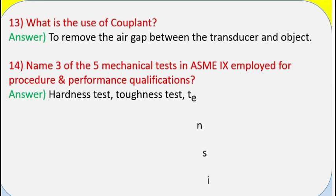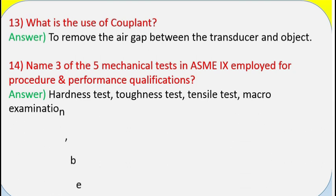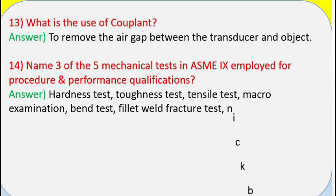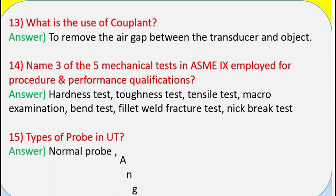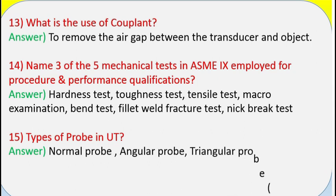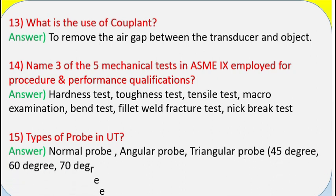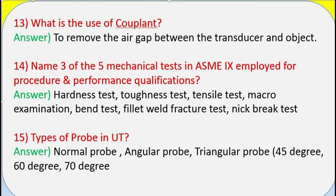Question 13: What is the use of couplant? Answer: To remove the air gap between the transducer and the object. Question 14: Name three of the five mechanical tests in ASME Section 9 employed for procedure and performance qualifications. Answer: Hardness test, toughness test, tensile test, macro examination, bend test, fillet weld fracture test, nick break test.